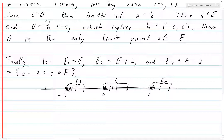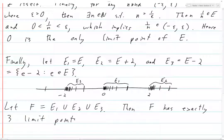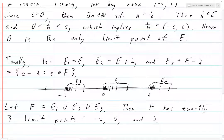Then F has exactly three limit points: negative two, zero, and two. The reason it has three limit points is that E1 had only zero as its limit point. These limit points are translation invariant — if we take E and shift it left or right, all the properties shift with it. So shifting by two moves the limit point to two or negative two, and all points and their properties shift accordingly.